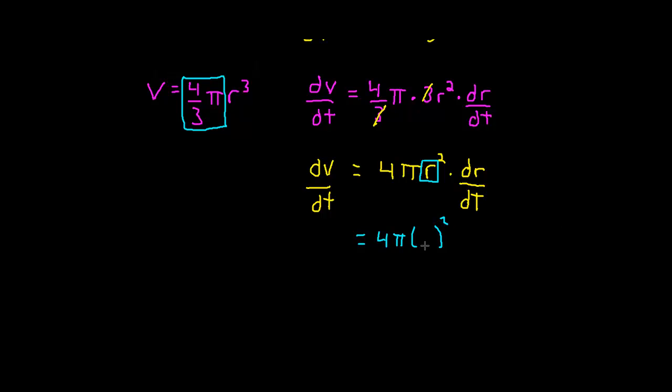Now here comes the substitution. The substitution, instead of r we're going to write 5. Times, now here comes our other substitution. What is dr/dt? And dr/dt from the problem above is 2, 2 centimeters per second.